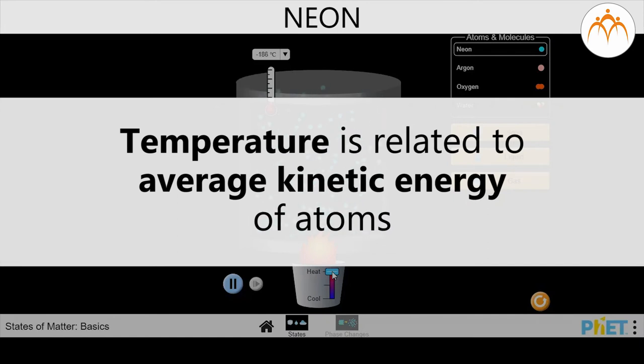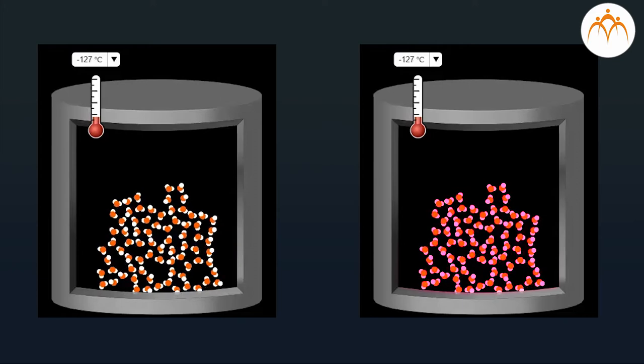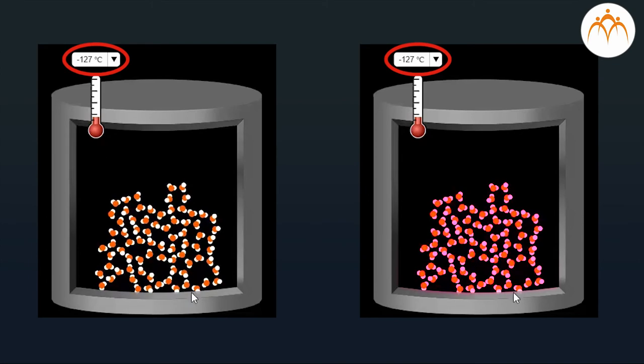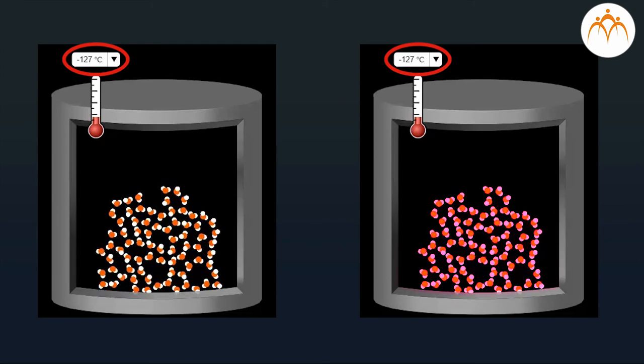Temperature of the substance is related to the average kinetic energy of atoms. If two different substances have the same average kinetic energy, their temperatures are also equal.